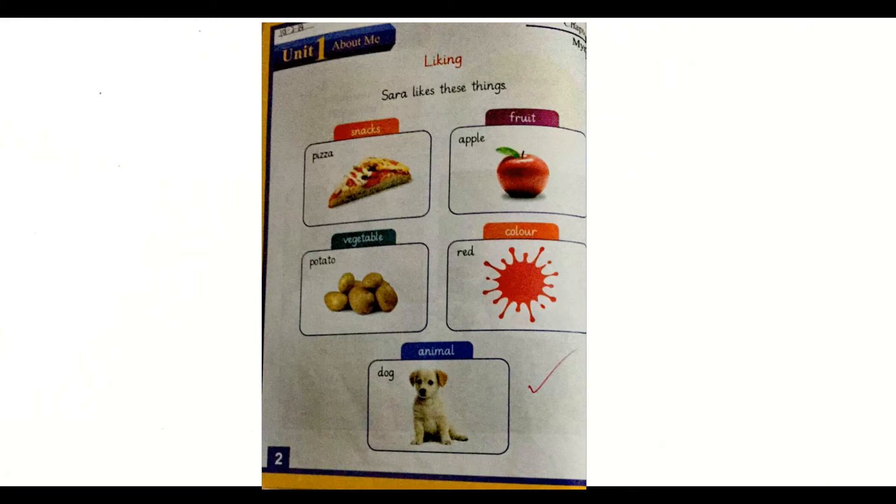Teacher will tell you about the things Sara likes. In snacks, Sara likes pizza. In fruits, she likes apple. In vegetables, she likes potato. In color, she likes red color, and in animals, she likes dog.